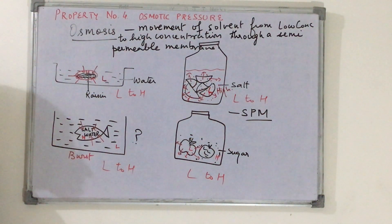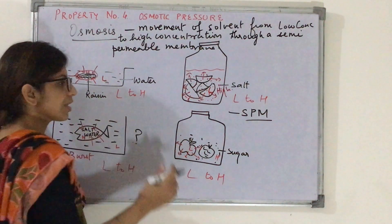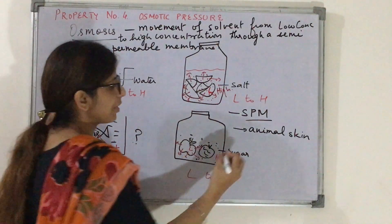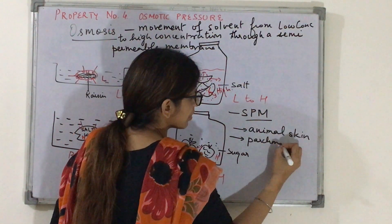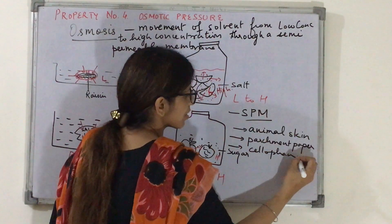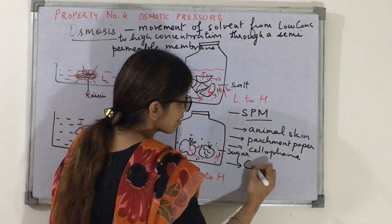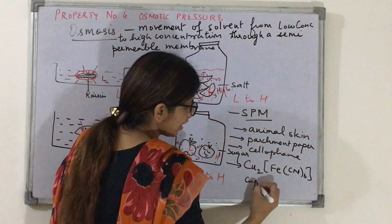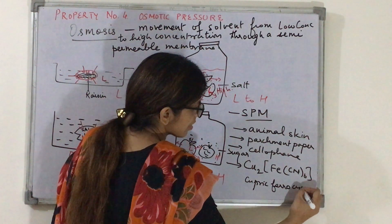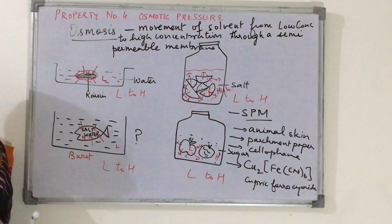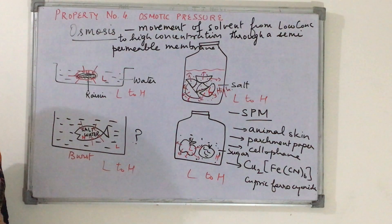Examples of semi-permeable membranes include parchment paper, cellophane sheet, and the artificial membrane Cu₂Fe(CN)₆ — cupric ferrocyanide. This artificial semi-permeable membrane is an important NCERT topic and a board exam question. Quickly take a screenshot of this.